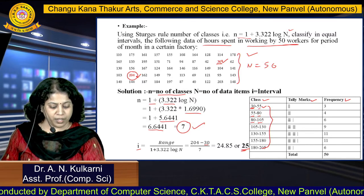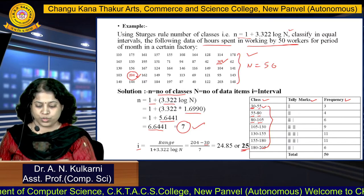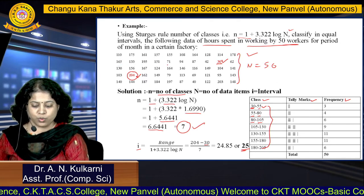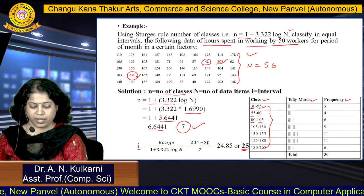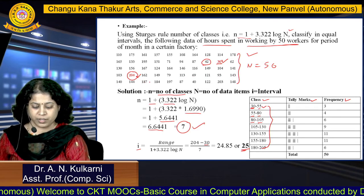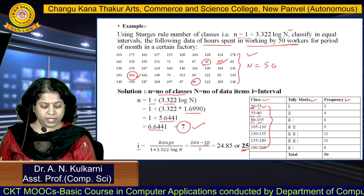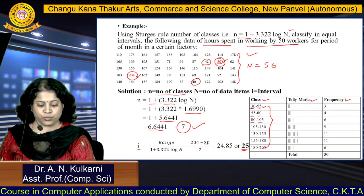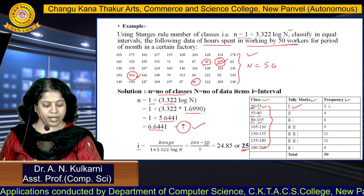For tally marks in the class 30 to 55: scanning the data rows, there are values 30, 40, and others in range — a total of 3 data items fall in 30 to 55. So the tally marks are 3 and frequency is 3.